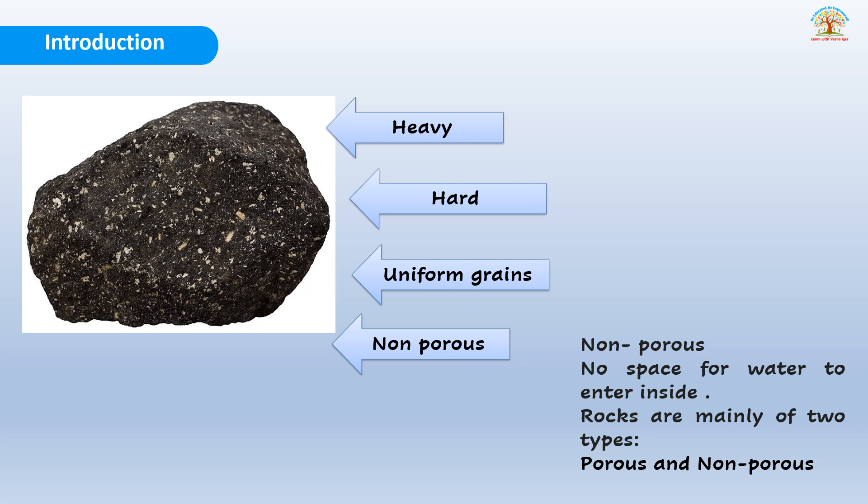Now I have taken up a rock. You can see it has some white pores in it. This rock is heavy, hard, and has uniform fine grains. It's non-porous - non-porous means there is no space for water to get in. Rocks are mainly of two types: porous and non-porous. Porous rocks allow water to enter inside, while non-porous rocks never allow water or any other particles to enter once they are formed.